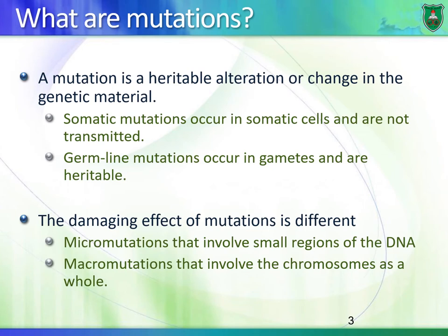Let's define what a mutation is. A mutation is a heritable alteration or change in the genetic material — basically a change in the base sequence of DNA. There are two types depending on where they take place: somatic mutations, which occur in somatic cells (any cell containing DNA other than reproductive cells), and germline mutations, which occur in gametes — sperm and egg — and are heritable. Somatic cell mutations are not heritable.